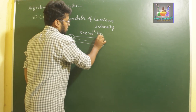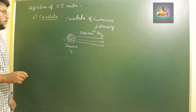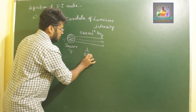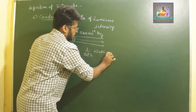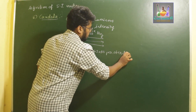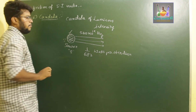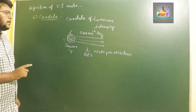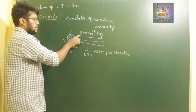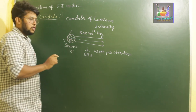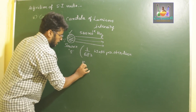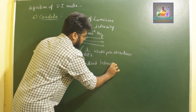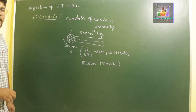If a source emits radiation of frequency 540 × 10¹² hertz and also has a radiant intensity of 1/683 watts per steradian, then that source is said to emit one candela of luminous intensity.